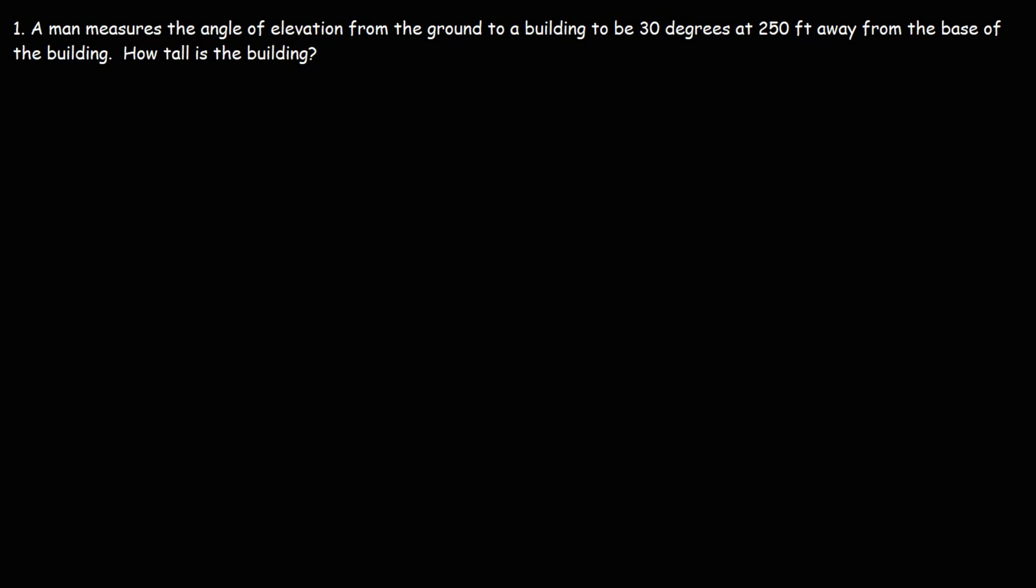A man measures the angle of elevation from the ground to a building to be 30 degrees at 250 feet away from the base of the building. How tall is the building?